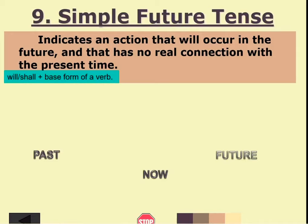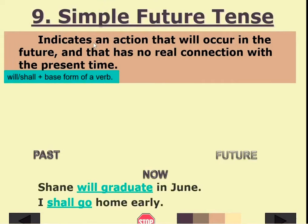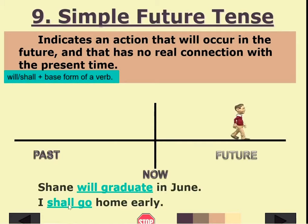Now let's talk about the simple future tense. It indicates an action that will occur in the future and has no connection with the present. The pattern is 'will' or 'shall' plus the base form of the verb. Examples: 'Shane will graduate in June.' 'I shall go home early.' We use 'will' for typical future actions, while 'shall' expresses a stronger sense of responsibility or obligation.